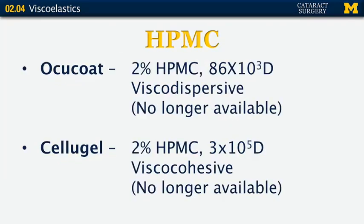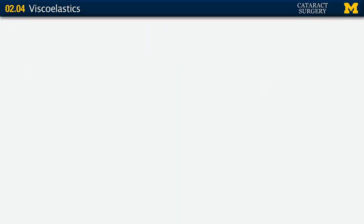HPMC is really not used in the United States any longer, but to make you look smart: OccuCoat and CelluGel were the viscodispersive and viscocohesive agents made with hydroxypropyl methylcellulose. Bausch and Lomb created OccuCoat — notice its very low molecular weight, so it is a coater and dispersive. CelluGel was created by Alcon with higher molecular weight, making it a cohesive agent. Neither of those are available in the United States any longer.